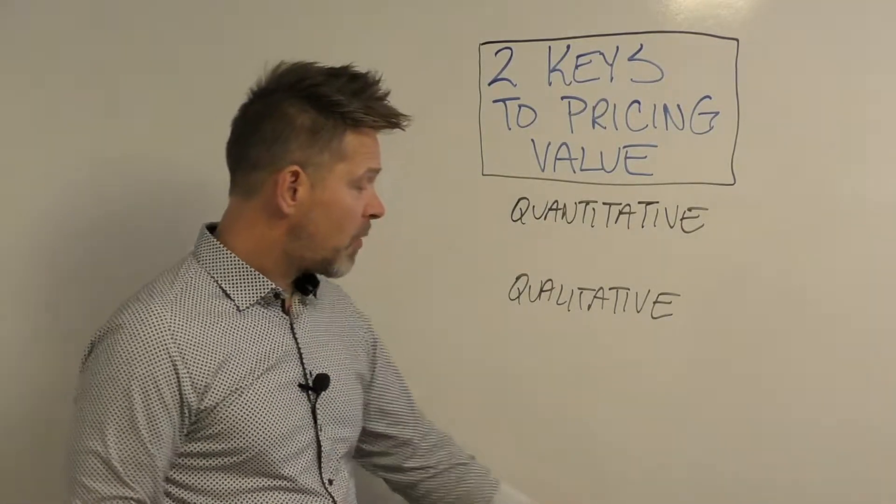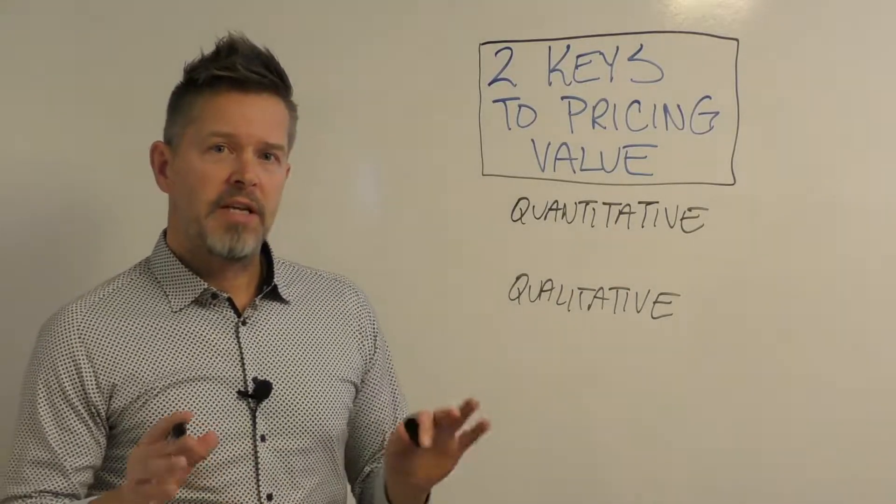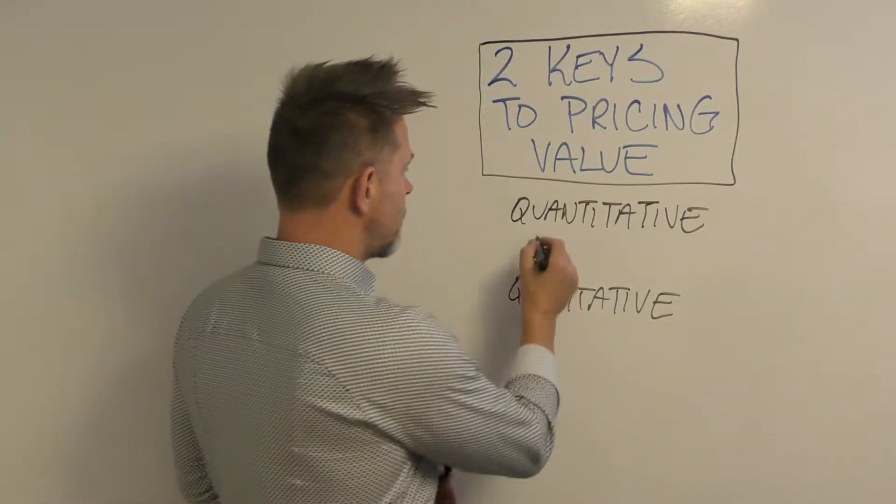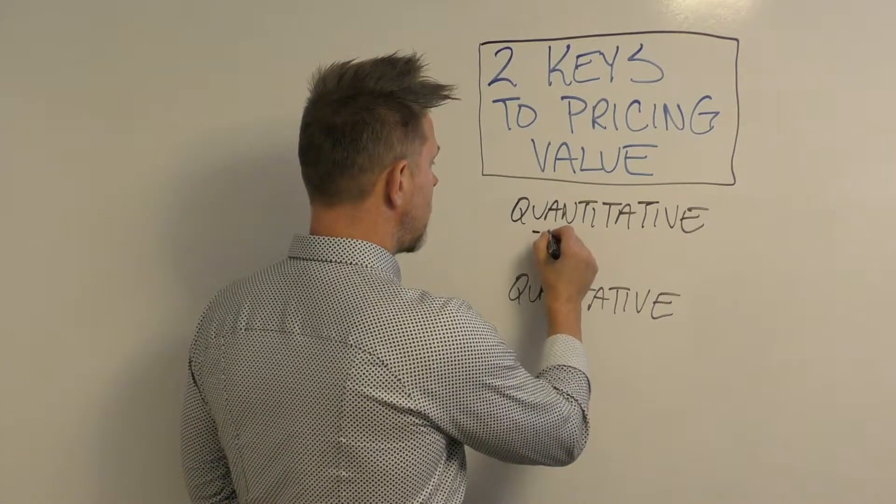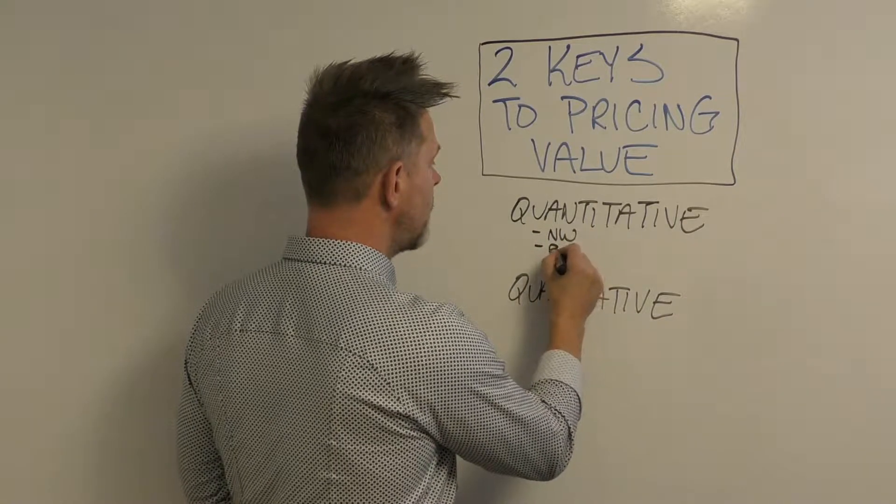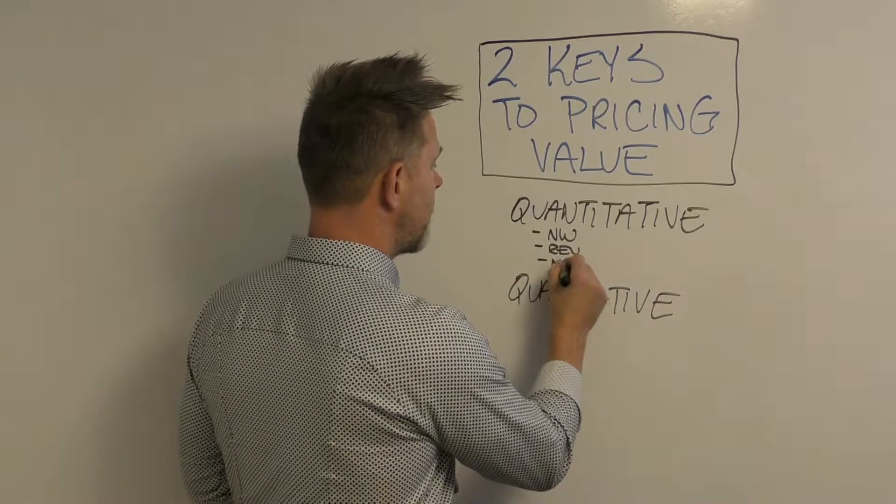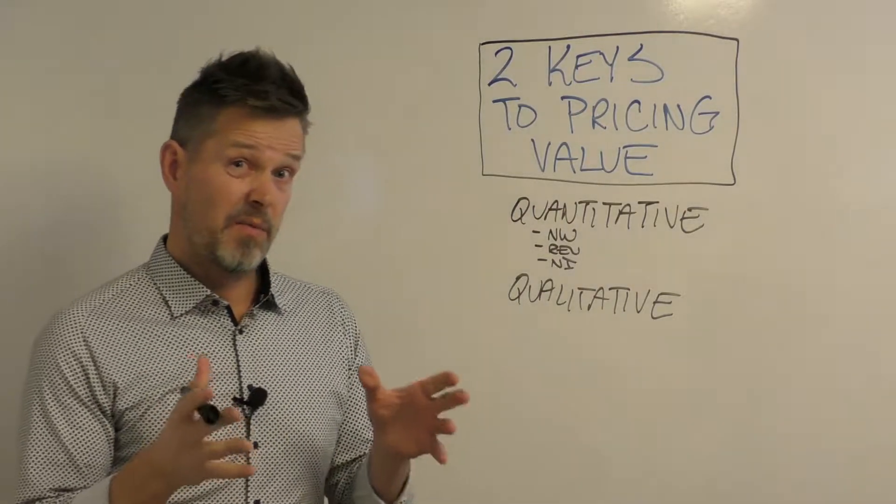So what do I mean by quantitative versus qualitative? From a quantitative perspective, there's kind of three numbers that I like to look at. First one is the client's net worth, their revenue model, and their net income.